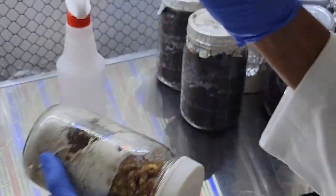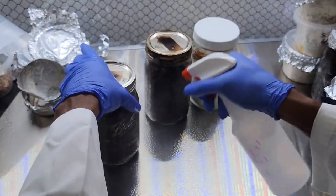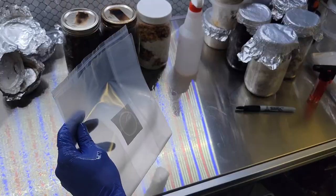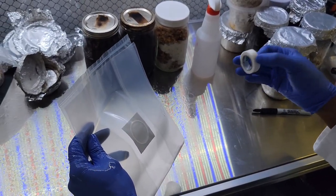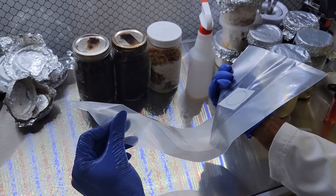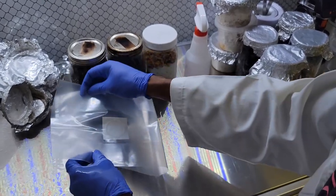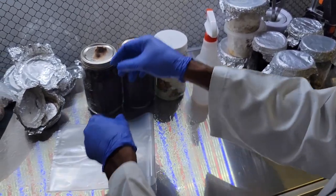Next up, we're moving on to fruiting block formation. A fruiting block is substrate and grain spawn. Just as the mycelium colonized the grain, we're going to use the grain spawn to colonize the substrate, and then they will be ready to fruit after that.